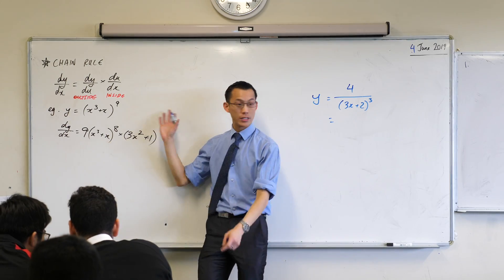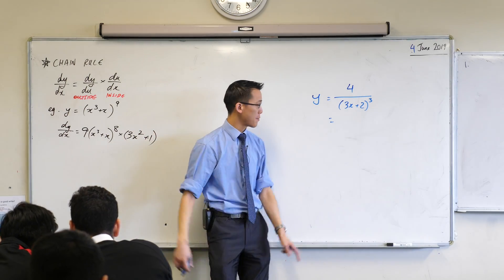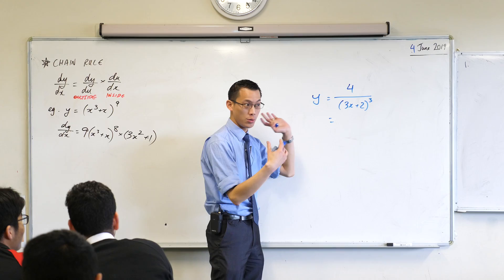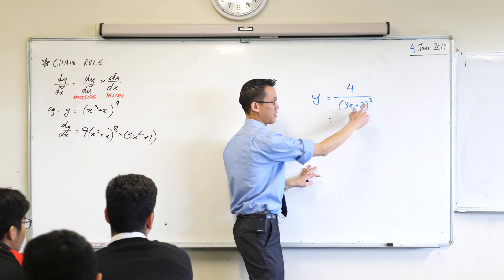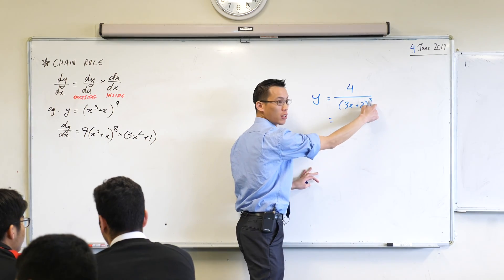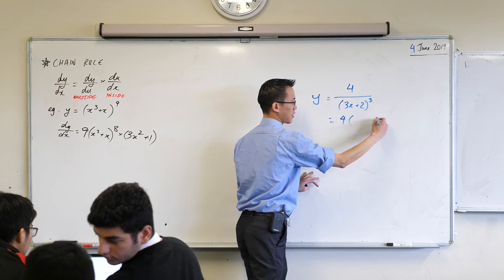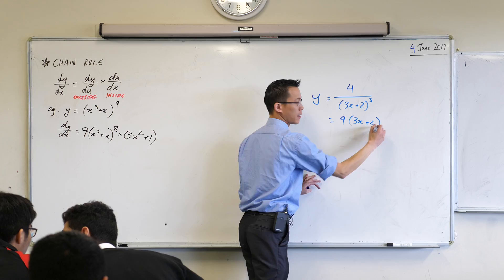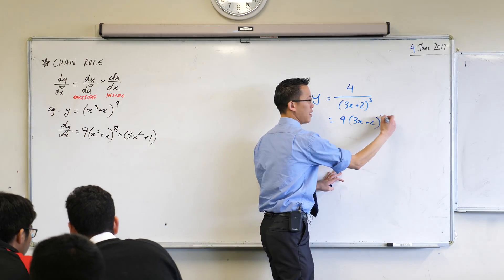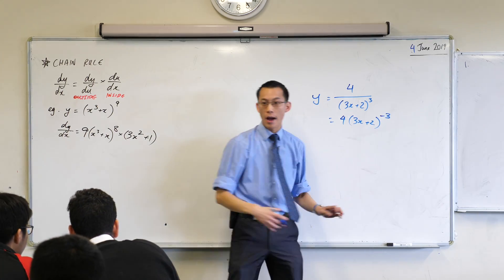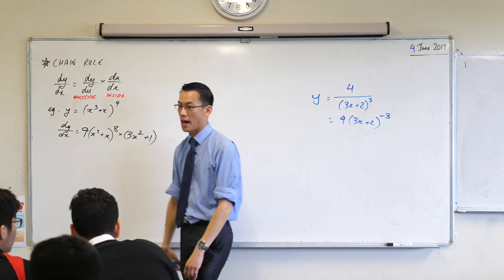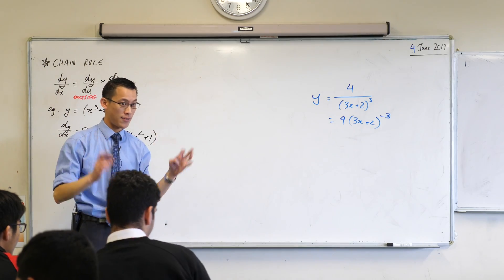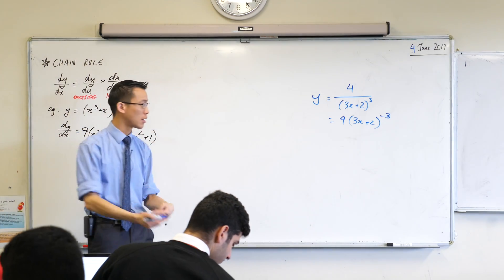If this is our function, I'm going to do it just like we did over here. I'm going to first write this in a nice form to differentiate, so instead of having this on the bottom, I'm going to write it with a negative index. What would the negative index be? Negative 3 — very good. So at this point I'm ready to go. I've got an outside function and an inside function, and I'll do them one at a time.